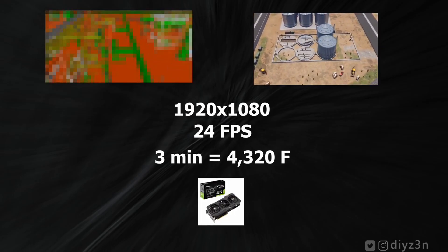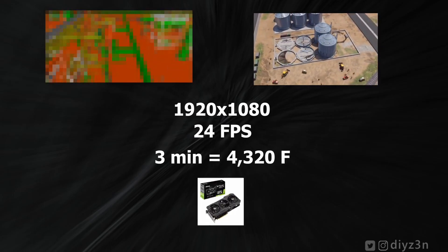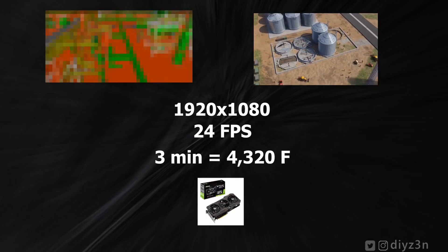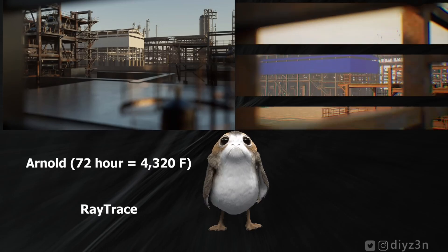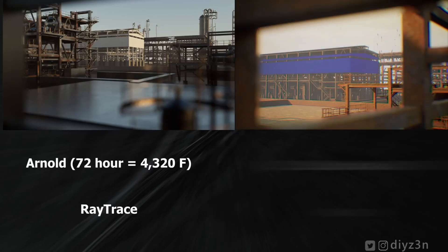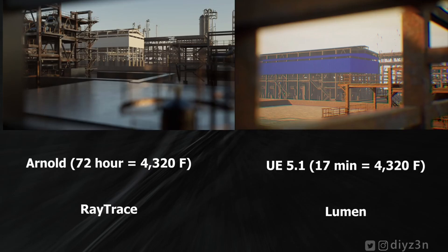I honestly have one RTX 3080 Ti. I did a test — rendered with Arnold, which is high-bias ray trace, and it took 72 hours. With Lumen, it's about 17 minutes. That's a miracle. Of course I'll lose some quality, but we chose Lumen.